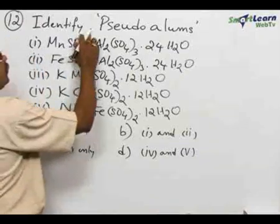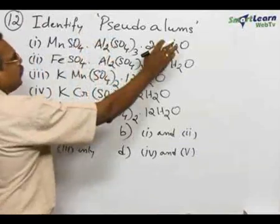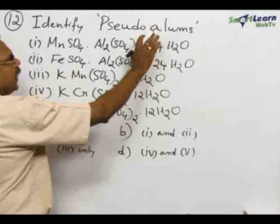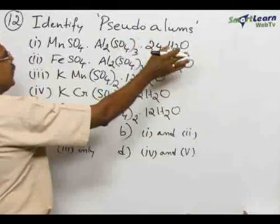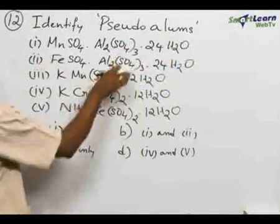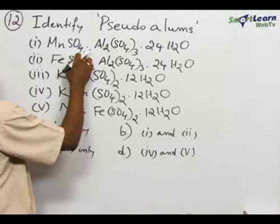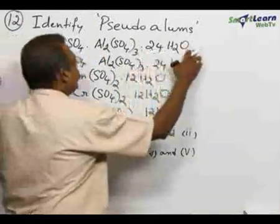Number 12, identify pseudo alums. They look like alums but they are not considered true alums. The compounds given are MnSO4, Al2(SO4)3, 24H2O,